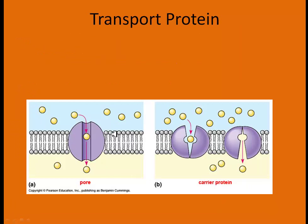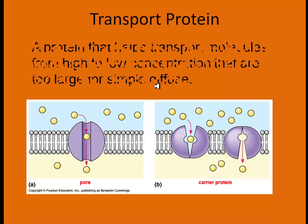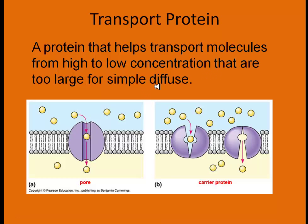Transport proteins are embedded into the phospholipid bilayer and allow materials to pass through that normally can't. They help transport molecules from high concentration to low concentration that are simply too large for simple diffusion. This is passive transport — it requires no energy — and it happens whenever there's more on one side than the other, as they try to reach equilibrium. Water is a good example, though water can fit right between the phospholipids without needing transport proteins.